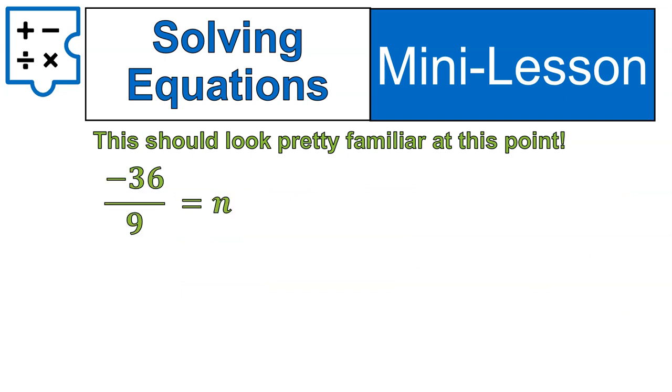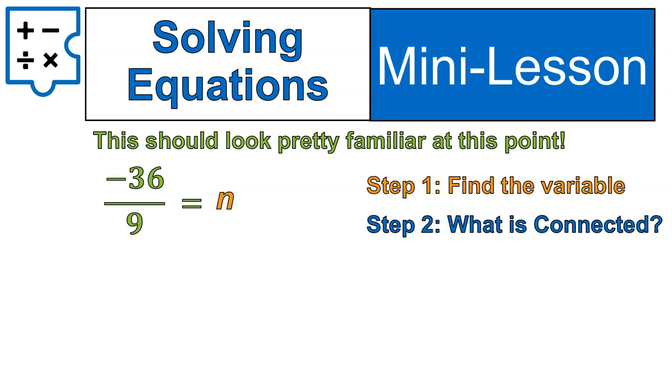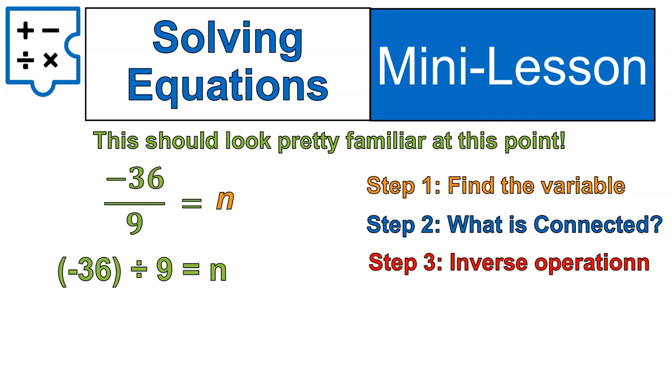With this equation, you might say, hey, I think I know a shortcut, and you're probably right. Try it out. Try and solve this one on your own, and come back, and I'll show you the steps I do. First step, find my variable. Second step, what's it connected to? It's not connected to anything. I don't have to do an inverse operation, because there's nothing to undo. I have the variable isolated by itself already, so I'm just going to divide. Negative 36 divided by 9 gives me negative 4.